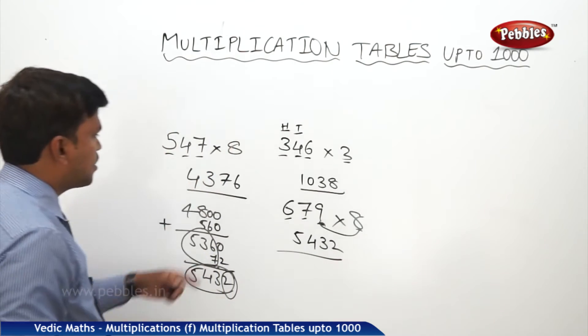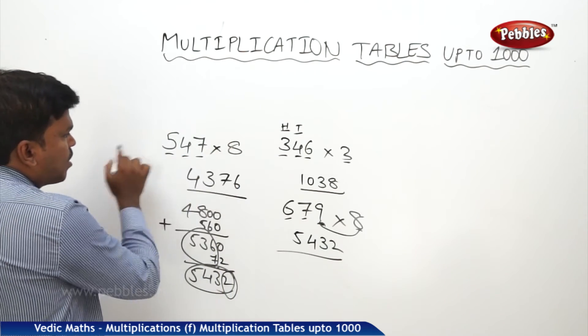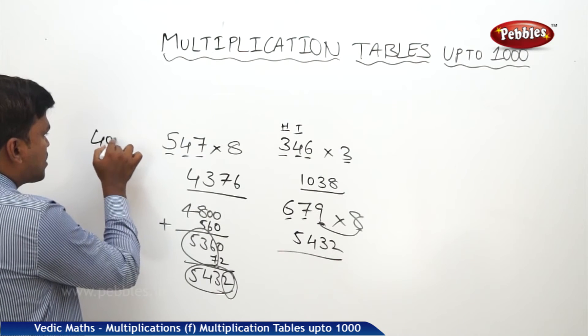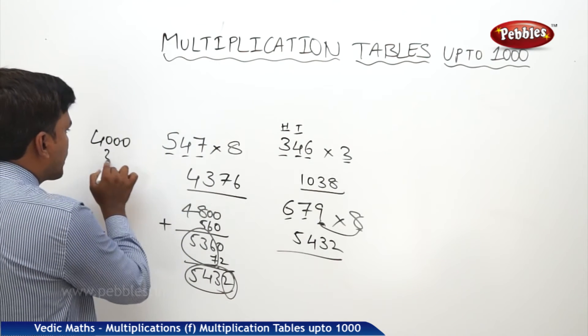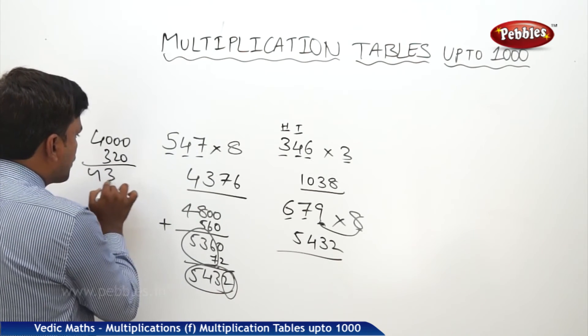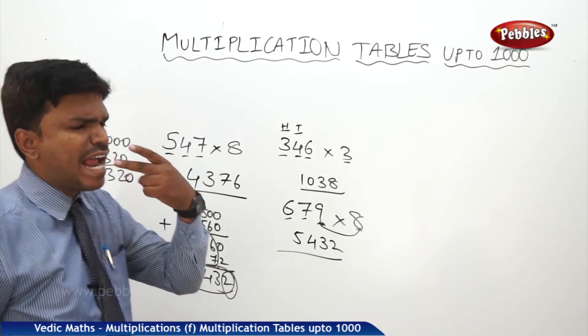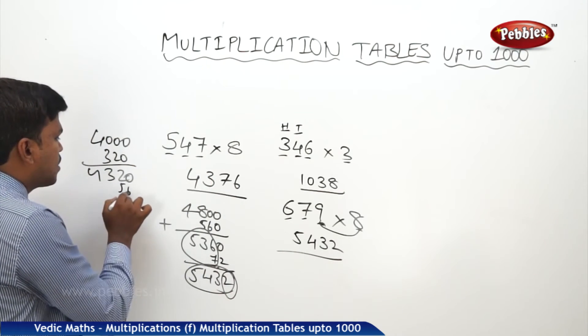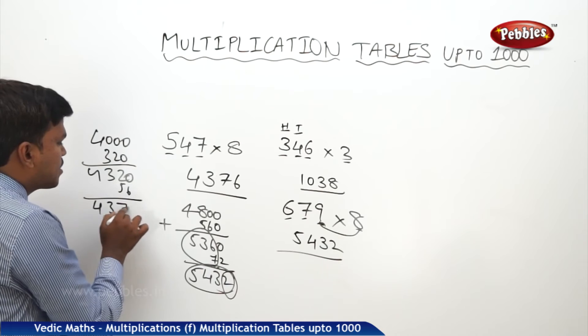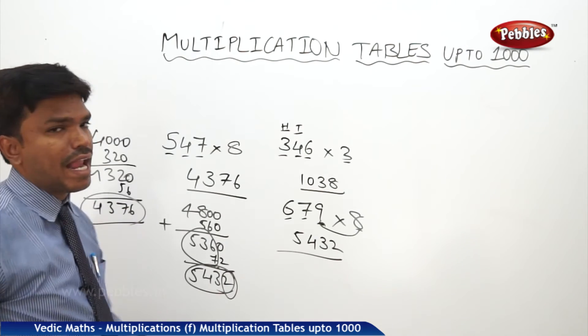Even this one also I did the same way. 547 into 8. 8 fives is 40, take it as 4100. 8 fours is 32, take it as 320. How much you will get? 4320. First add two numbers, then go for the third one. Now what is 8 sevens? 56. So what is the answer? 4376. Like this you need to calculate in the mind.